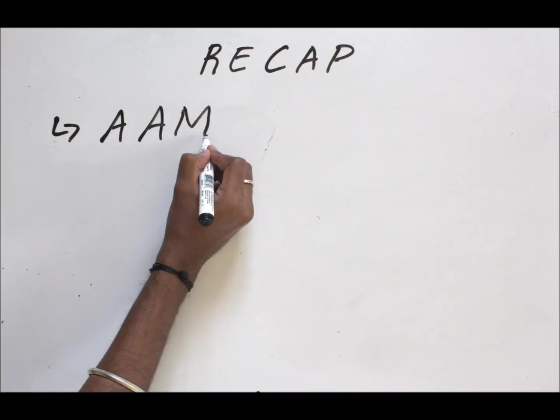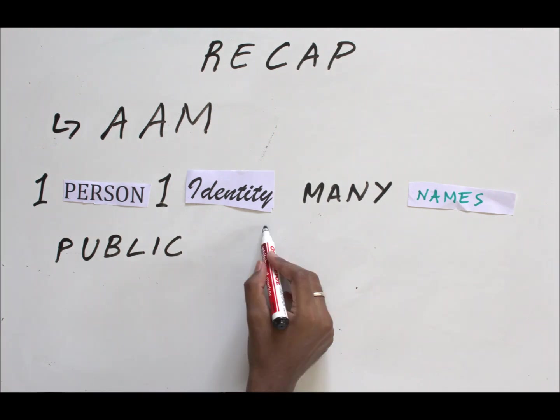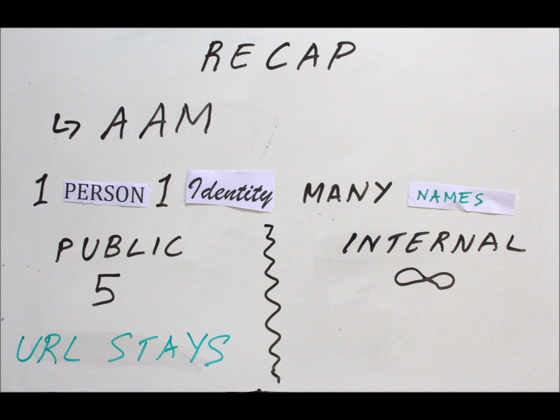Next, we talked about Alternate Access Mapping. Alternate Access Mapping is used when we want to have one person with one identity but with multiple names. Within Alternate Access Mapping, there is a public URL and an internal URL. There can be a maximum of five public URLs, but there can be infinite internal URLs mapped to each public URL. And the other difference is that when you type in a public URL, the URL stays. It does not change in the browser, but whereas in an internal URL, it automatically changes to the public URL.